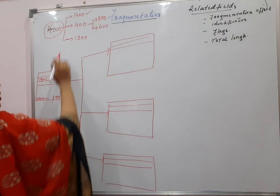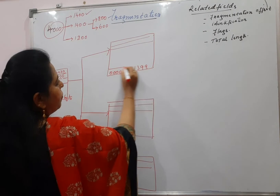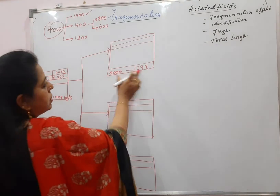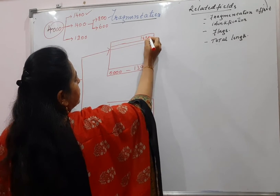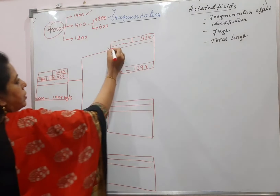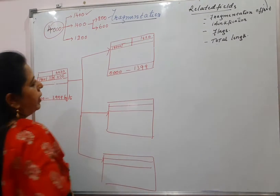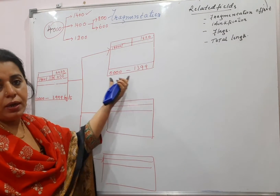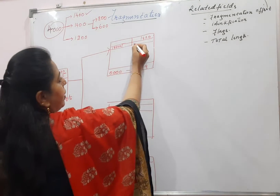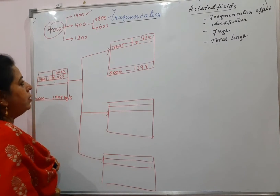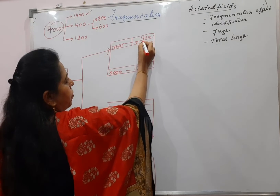The first fragment is 1400 bytes. It starts from 000 to 1399 — this is fragment 1, and this is the range of bytes. The total length is 1400 plus 20, which is 1420. Identification: the fragment will carry the same identification as the original datagram. Then comes the more bit value. This fragment does not have the complete information — it is only a part of the packet — hence the more bit value will be 1. The offset: this is the first fragment, so its position starts from 000.